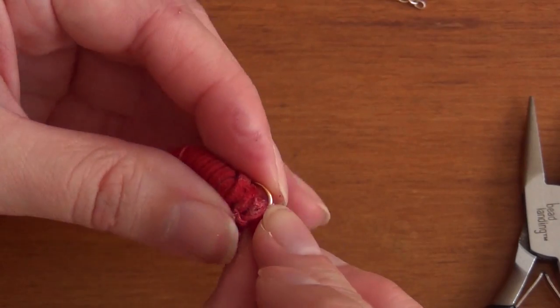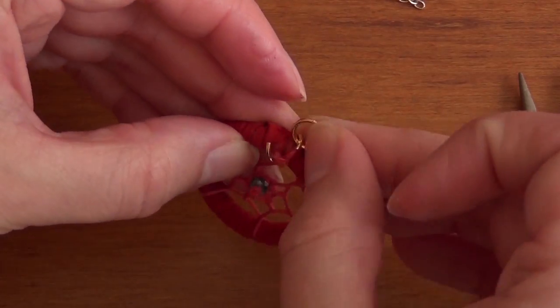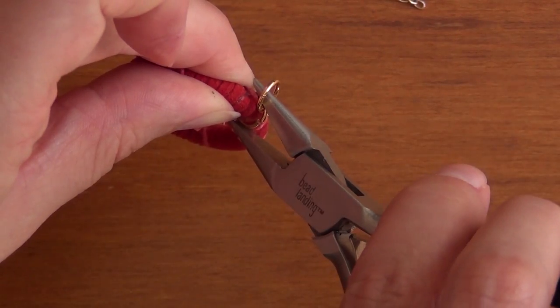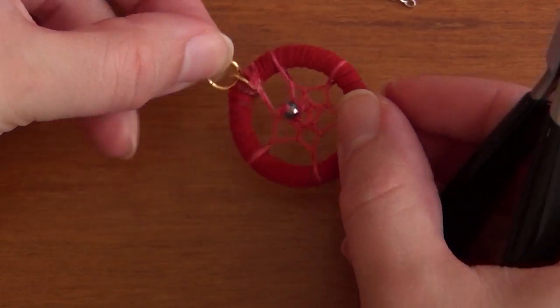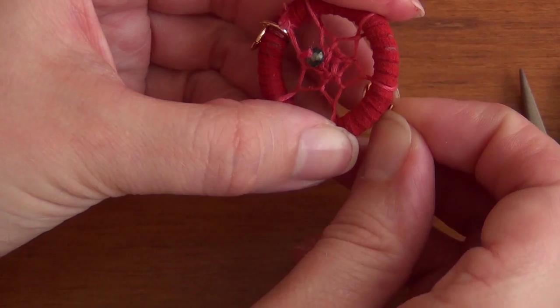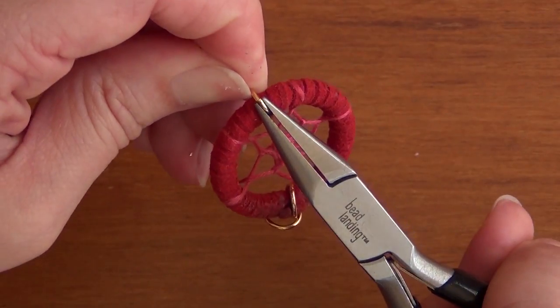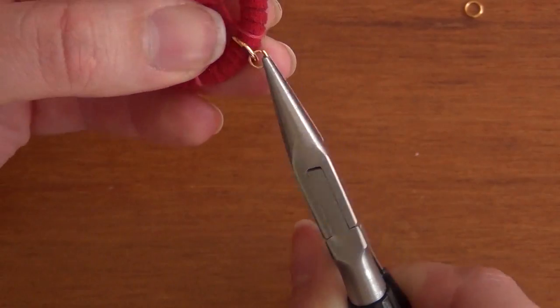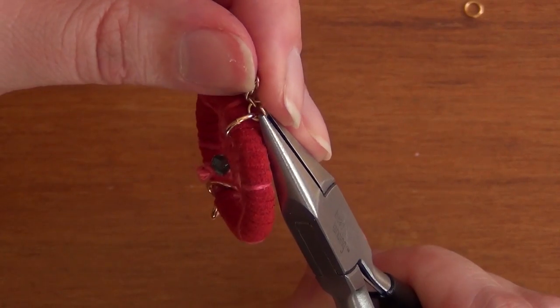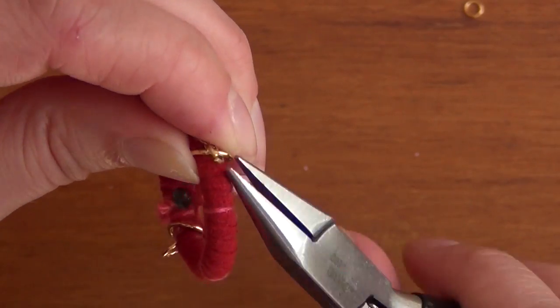Once you've done that, open up a large jump ring, attach that to your large loop, and then attach another large jump ring to that one, and close it up. That's what you're going to attach your clasp to. Then open another large jump ring, and attach it to the opposite side of your dreamcatcher. Attach a small jump ring to that one, and then use that to attach your chain.